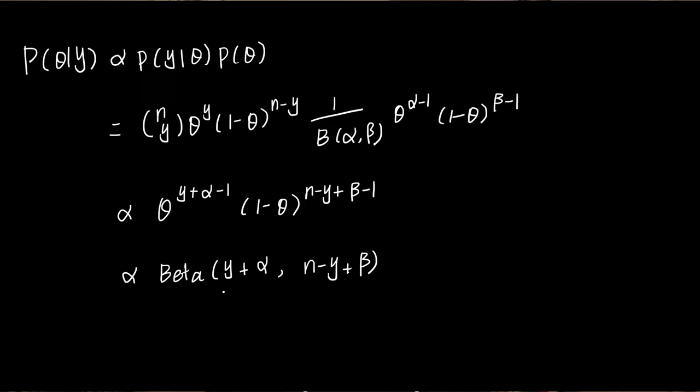Interesting to note that the beta distribution is conjugate to the binomial family, meaning that if we start with a beta prior, we'll end up with a beta posterior.